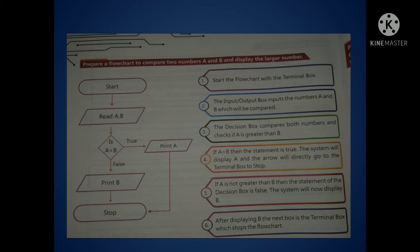Fourth, we will see whether the statement a or b is true or not. The system will display a and the arrow will directly go to the terminal box to stop. Fifth, if a is not greater than b, then the statement of the decision box is false. The system will now display b. After displaying b, the next box is the terminal box which will stop the flowchart.